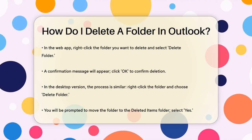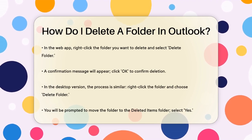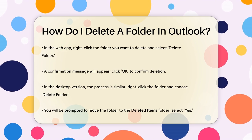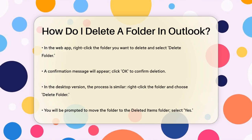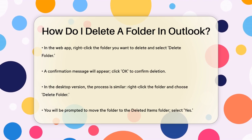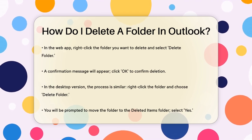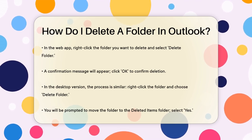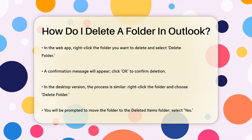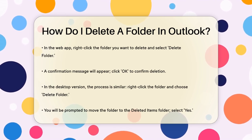For the Outlook web app, start by logging into your Microsoft account and opening your Outlook inbox. On the left side, you'll see a folder pane. Right-click on the folder you want to delete and select Delete Folder. You'll get a confirmation message asking if you're sure you want to delete the folder and all its contents. Click OK to proceed.